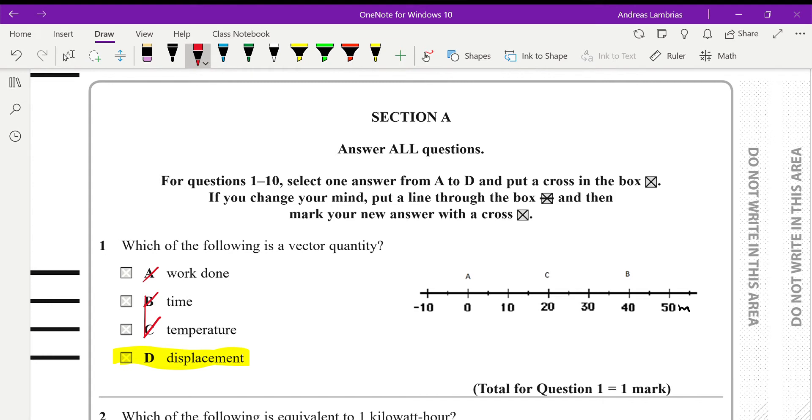Distance is a scalar quantity. Displacement is a vector. So what is displacement and what is distance? If I start from point A and I walk to point B and then walk back to point C.